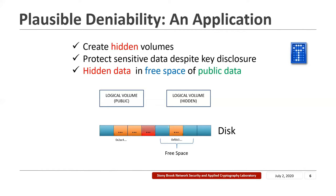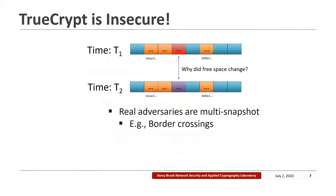There are several plausible deniability tools, including TrueCrypt and its successor VeraCrypt. TrueCrypt allows a user to create multiple logical volumes, some of which can be marked as hidden. The data in the hidden volumes are stored on the disk in the free space of the public volumes. So when the user is coerced to hand over her encryption keys, she hands over the key for her public volume and claims the rest of the disk is free space. However, with multi-snapshot adversaries, TrueCrypt is insecure.